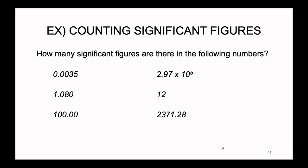Here's an example problem: how many significant figures are there in the following six numbers? Feel free to pause and see if you can figure it out based on the five rules. Let's break them down one by one. For 0.0035: all non-zeros are significant (rule 1), and all zeros in front don't matter (rule 4). There are only two non-zero digits, so 0.0035 has two significant figures.